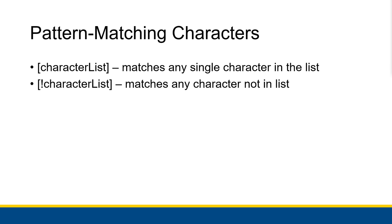We also have square brackets as pattern matching characters. You type square brackets and inside them you type a bunch of characters all next to each other with no commas or spaces separating them — unless you actually want to match a comma or space. The square brackets will match any single character in that list. You can also put an exclamation mark right after the opening bracket before your characters, which will instead match any character NOT in that list.